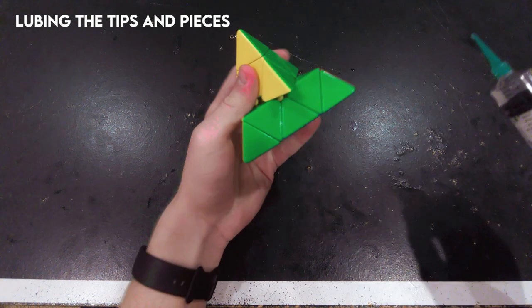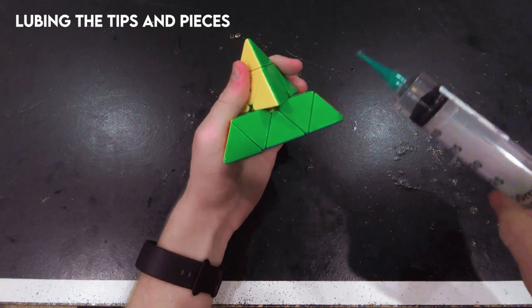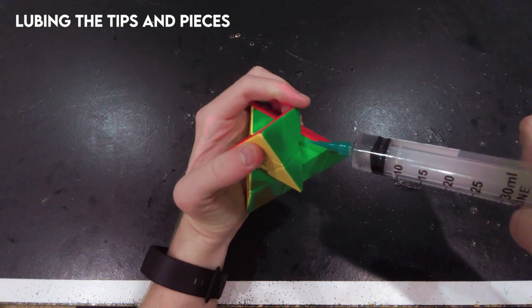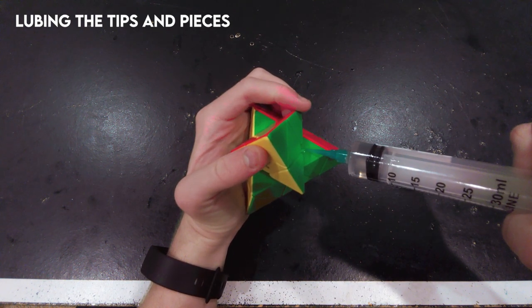After that, we're going to lube the body. For this, I just turn aside halfway and then put a generous amount of weight five on this torpedo. After that, I put a line of weight five on the center next to it.